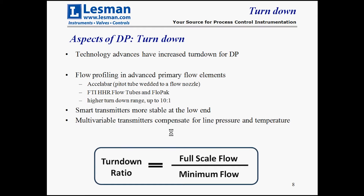Technology advances have increased available turndown for DP in two ways. First, combining flow elements gives a flow profile usable over a wider range—examples are the Accelabar, which is a pitot tube inside a flow nozzle, and FTI's HHR flow tubes and flow packs, specially designed venturis with rounded edges that can give 10 to 1, sometimes up to 20 to 1 turndown range. Second, smart transmitters are far more stable at low-end readings, and multivariables compensate for line pressure and temperature, both contributing to better turndown.